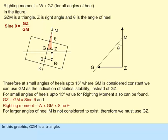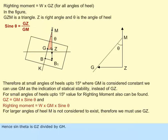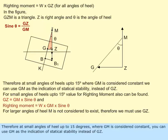In this graphic, GZM is a triangle. The angle at Z is 90 degrees and the angle at M is theta, which is the angle of heel. Hence, sin theta equals GZ divided by GM. Therefore, at small angles of heel up to 15 degrees, where GM is considered constant, you can use GM as the indication of statical stability instead of GZ.